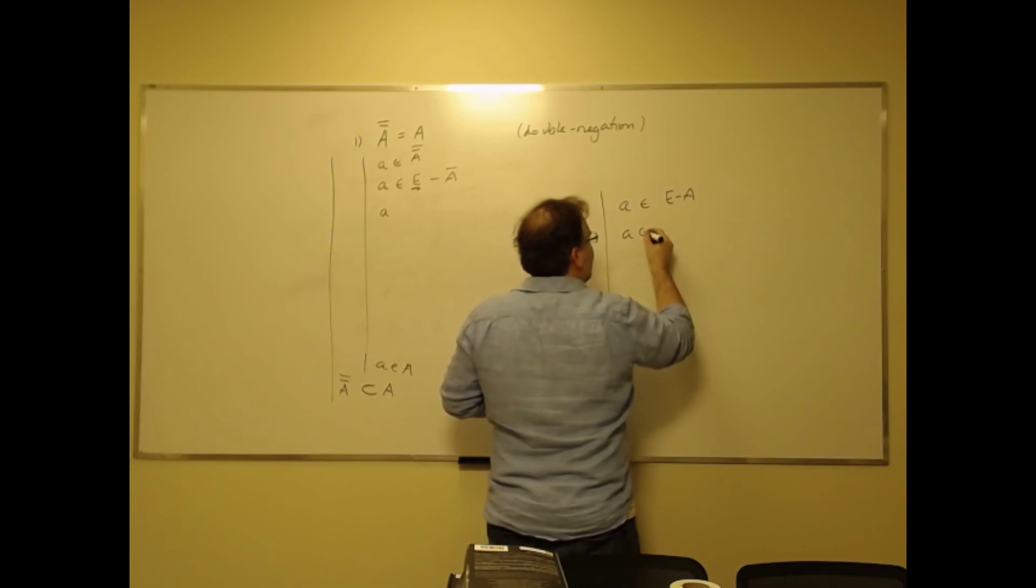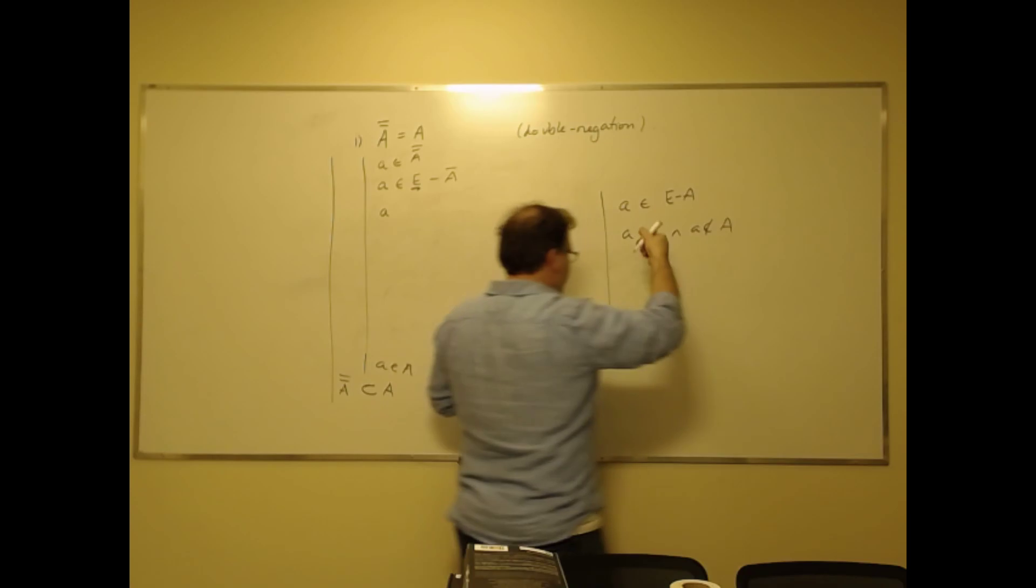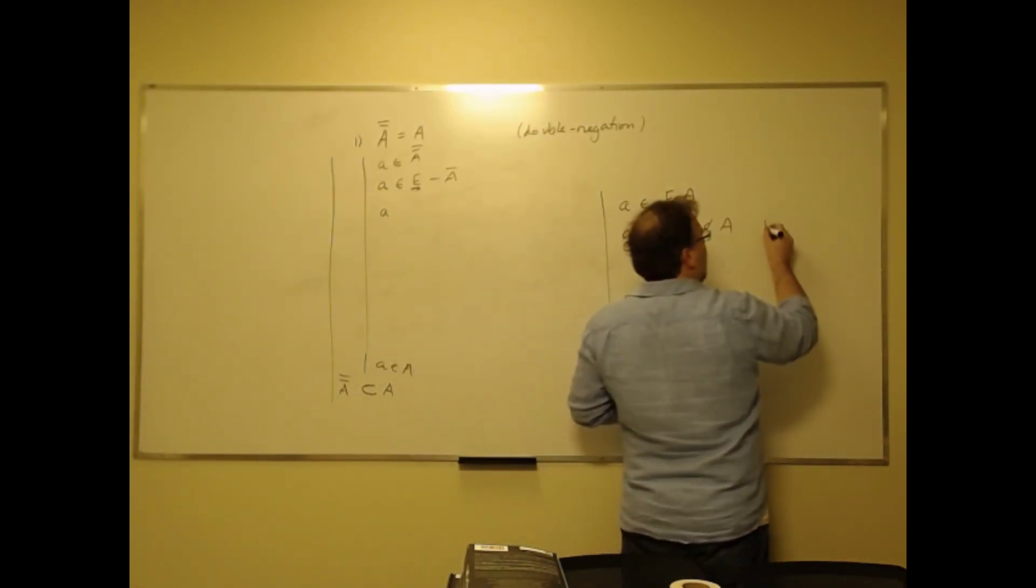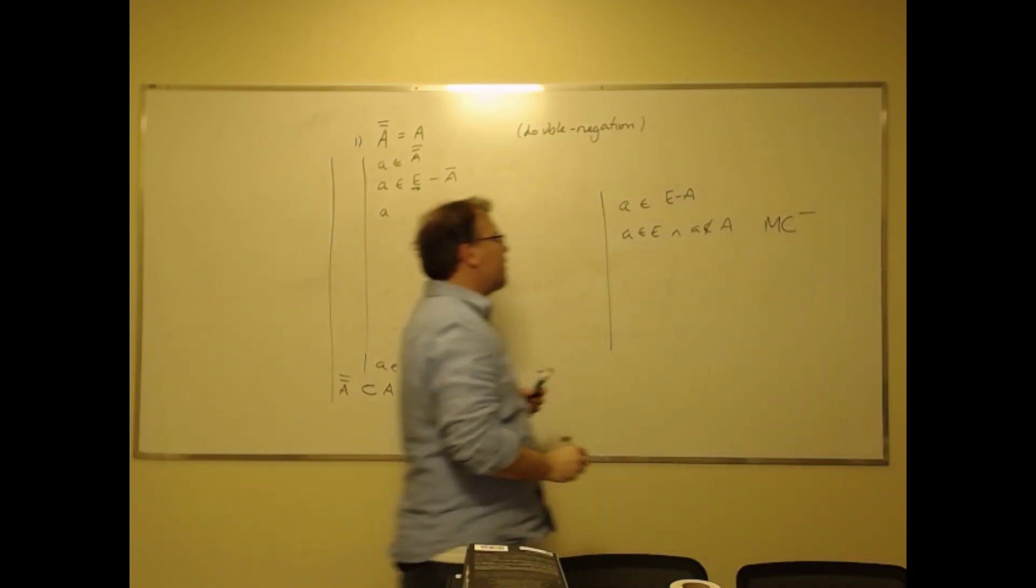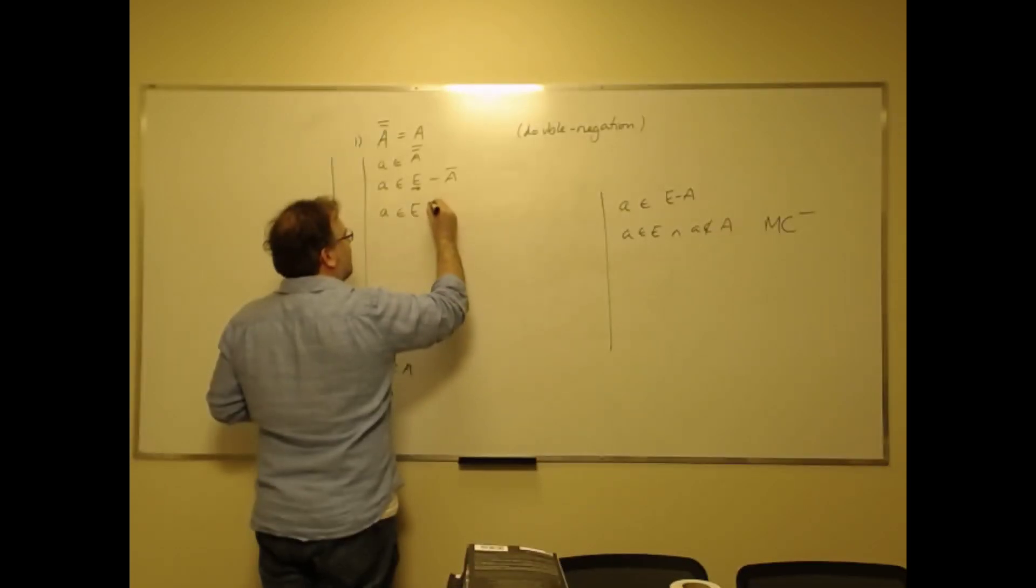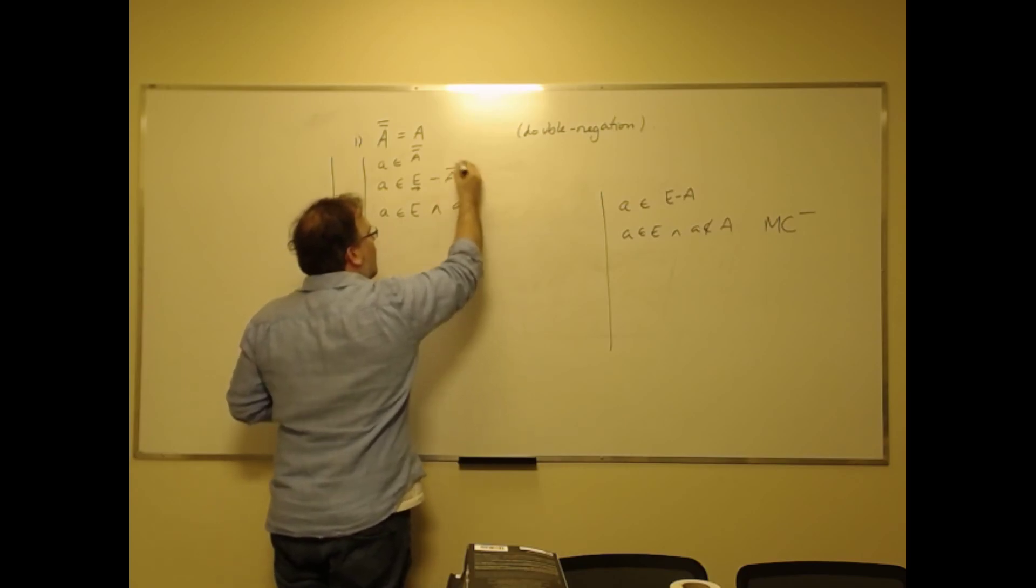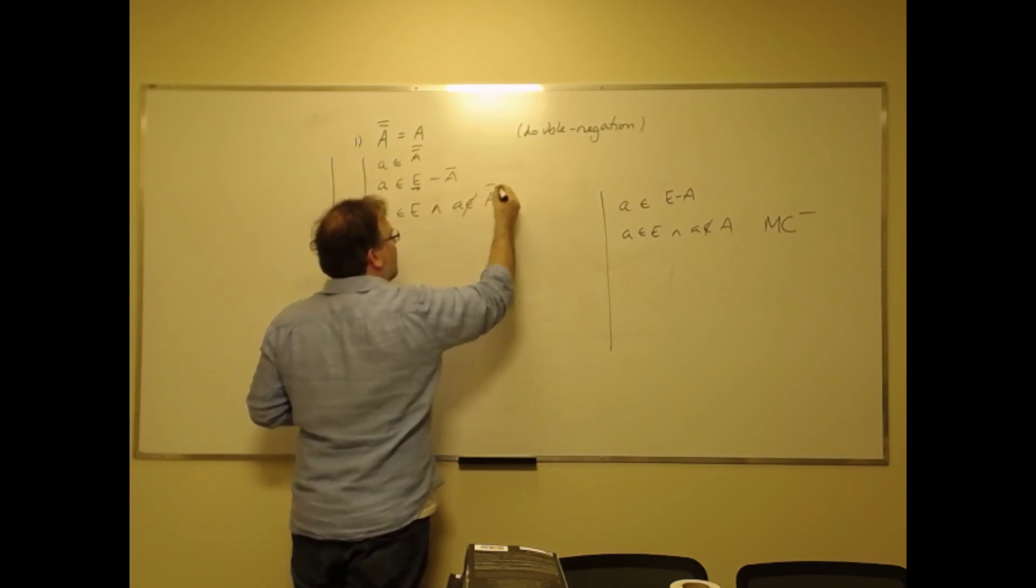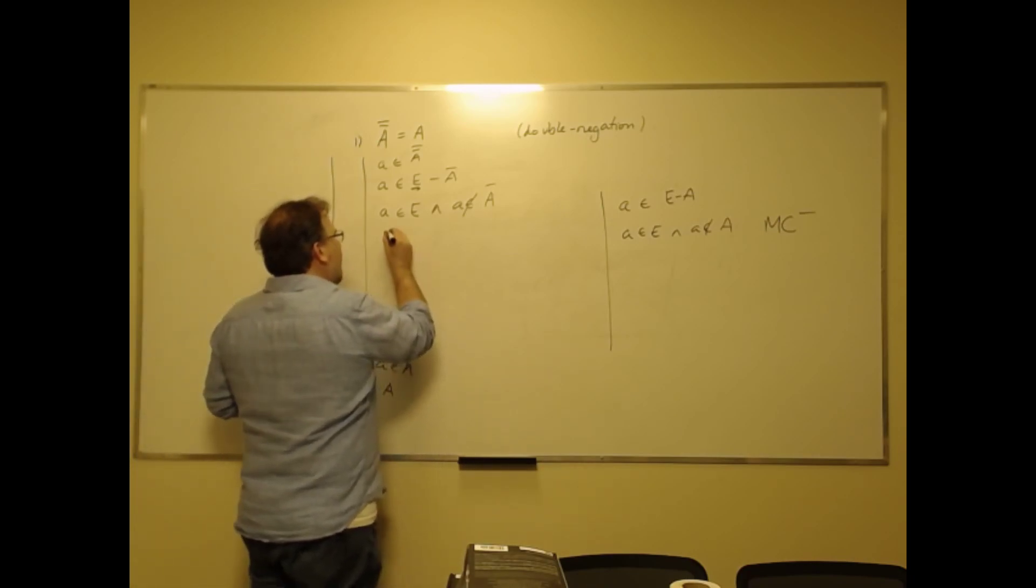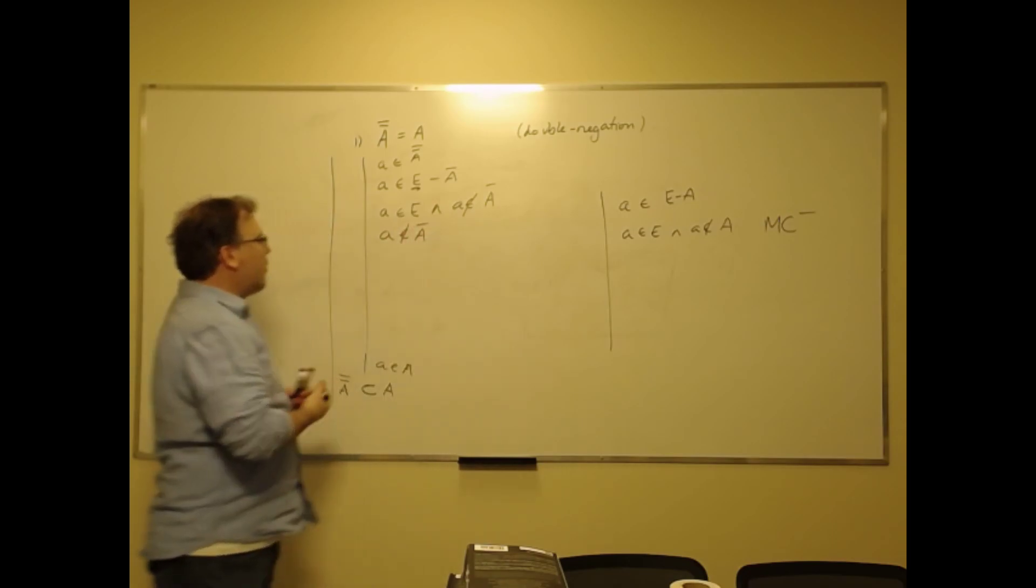That means A is in the complement—that means A is in E and A is not in the complement of A. You can flip this around to get the second membership condition of complement. So that means A is in E and A is not in the complement of A. All right, so now we can do a conjunction elimination to focus just on that part.